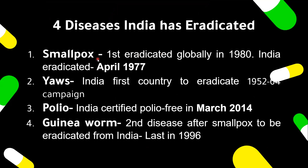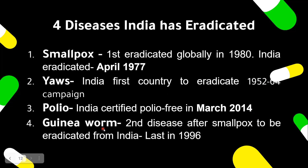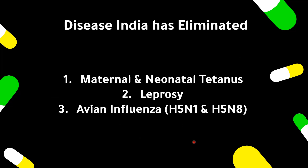There are four diseases that India has eradicated. First, smallpox — eradicated globally in 1980, but India had already eradicated it in 1977. Second, yaws — India was the first country to eradicate it during the 1952–1964 campaign. Third, polio — India received the certificate of being polio-free in 2014. Fourth, Guinea worm disease — the second disease after smallpox that India eradicated, with the last case in 1996. So the four diseases India has eradicated are smallpox, yaws, polio, and Guinea worm disease.